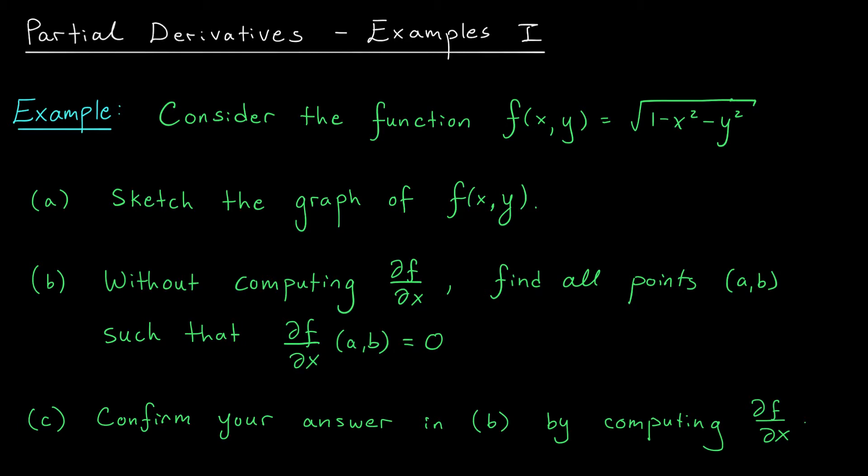In part a we will sketch the graph of this function. In part b without computing its partial derivative we're going to find all points where the partial derivative with respect to x is zero. And finally in part c we really will do the computation. We'll compute partial f by partial x and confirm that our answer in b is correct.